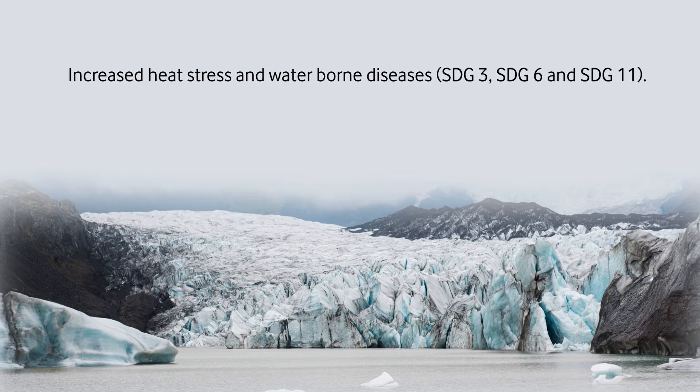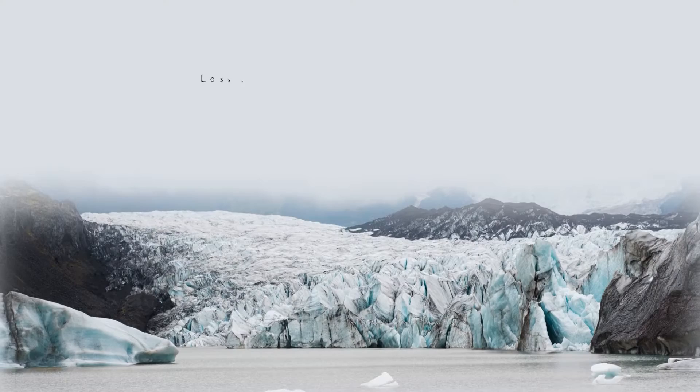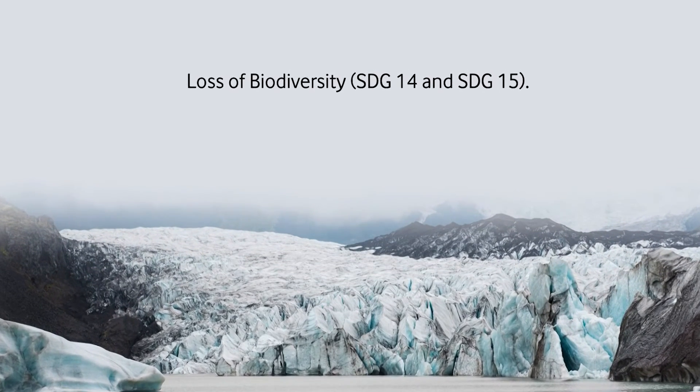Increased heat stress and the heat island effect will have repercussions on the health of people living in cities, making them susceptible to heat strokes. Waterborne diseases will also become more common, impacting the realization of SDG 3, SDG 6, and SDG 11. Loss of biodiversity due to ecosystem changes caused by global warming and climate change will affect the realization of SDG 14 and SDG 15.